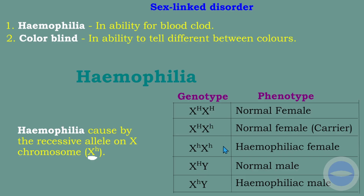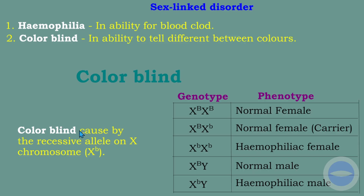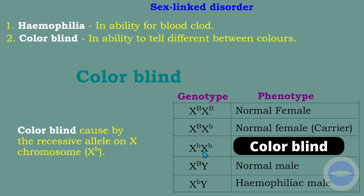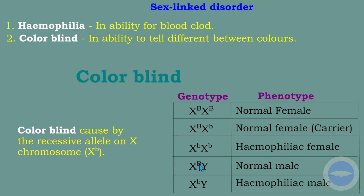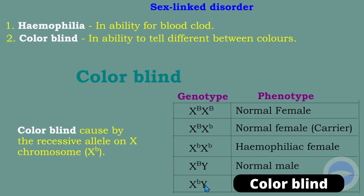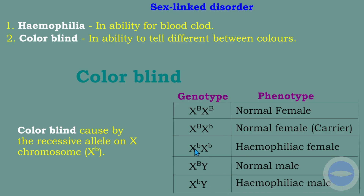Colorblindness is also passed through the sex chromosome and is caused by a recessive allele on the X chromosome. Using the letter B: X^B X^B = normal female; X^B X^b = normal female but a carrier who can pass the disorder to offspring; X^b X^b = colorblind female. In males: X^B Y = normal male; X^b Y = colorblind male. The condition is identified by the presence of the recessive small letter on the X chromosome.